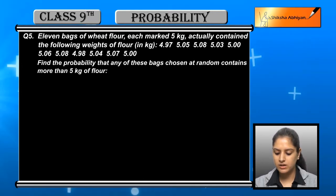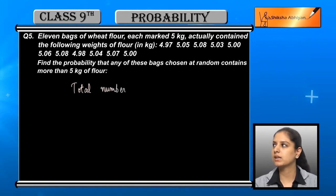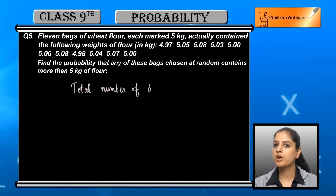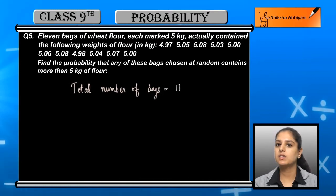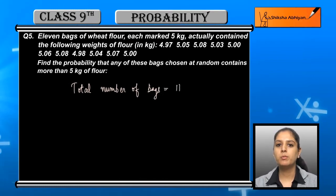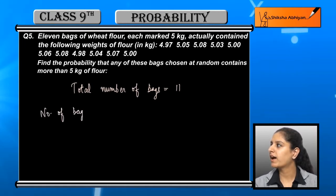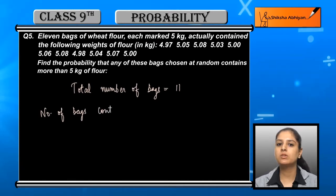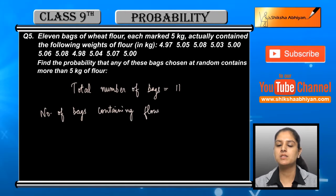From these 11 bags, we have to find the probability that any bag chosen at random contains more than 5 kg of flour. According to the question, the total number of bags is 11. We need to count out of those bags which have more wheat flour than 5 kg.